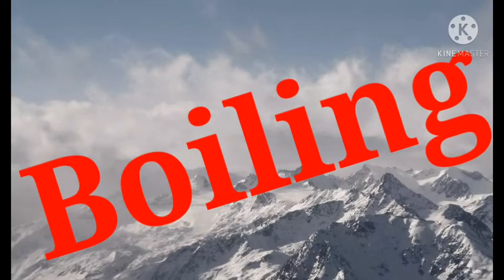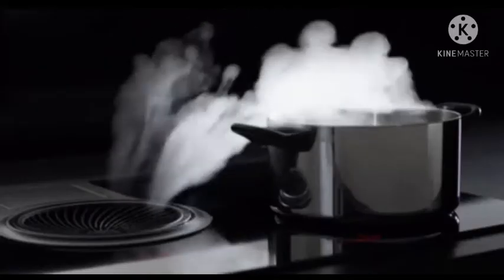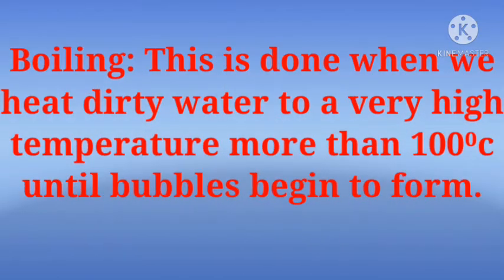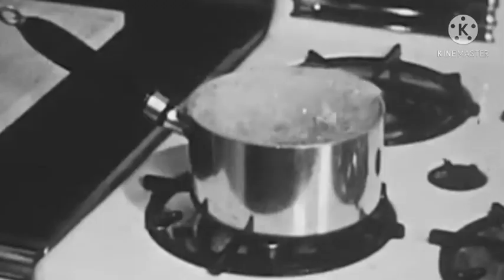Number two: boiling. Boiling is done when we heat dirty water to a very high temperature, more than 100 degrees Celsius, until bubbles begin to form. You can see the water bubbling.